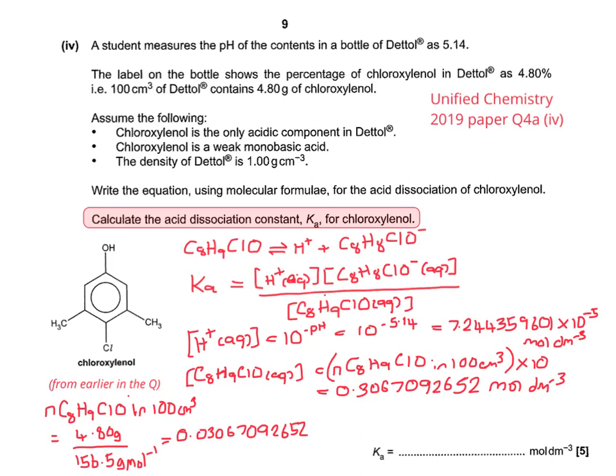So now we can see where to insert the numbers into the Ka expression. We can do the Ka calculation. 1.71109099 times 10 to the minus 6.